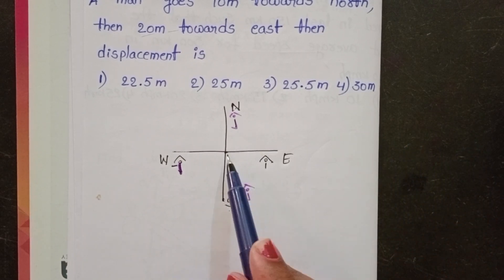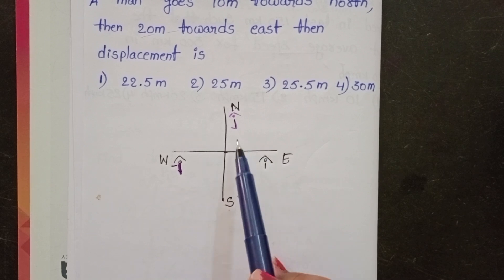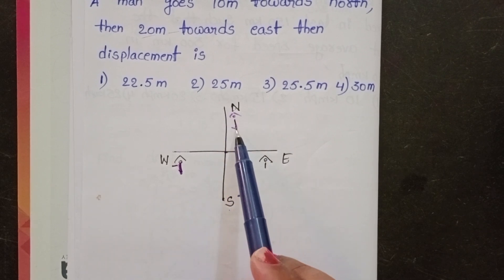Take the unit vector along east direction is plus i cap and along the north direction is j cap.